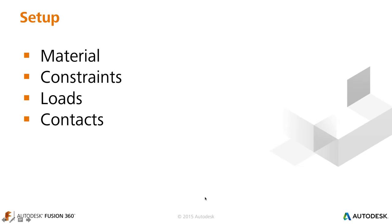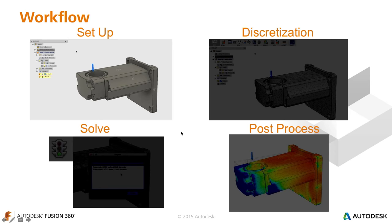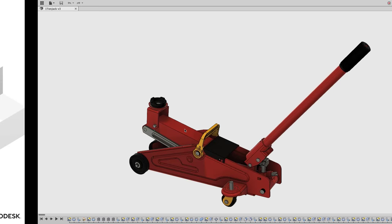Let's go ahead and set up a model. These are the things we need to set up: materials, constraints, loads, and if you're in an assembly, we need to do contacts. Let's jump into Fusion 360.